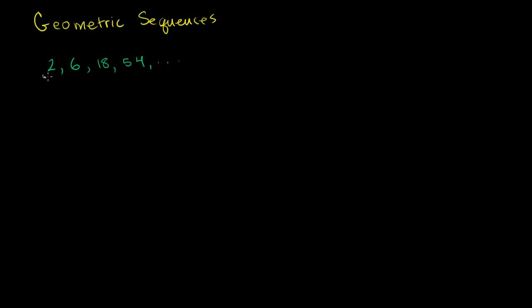So I started, if we want to get some notation here, this is my first term. We'll call it a1 for my sequence. And each time, I'm multiplying it by a common number, and that number is often called the common ratio. So in this case, a1 is equal to 2, and my common ratio is equal to 3.